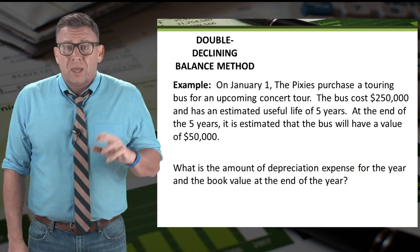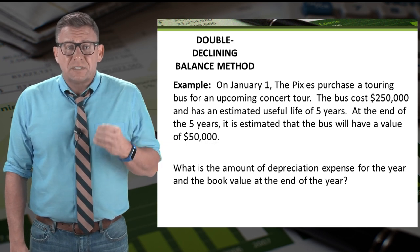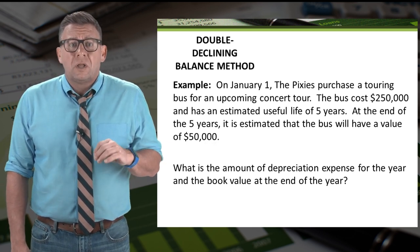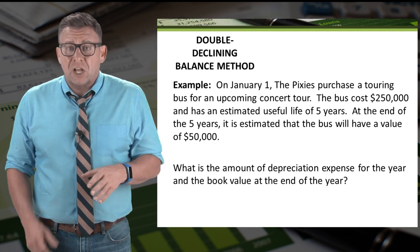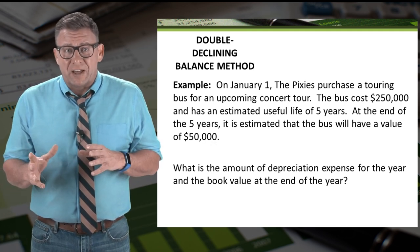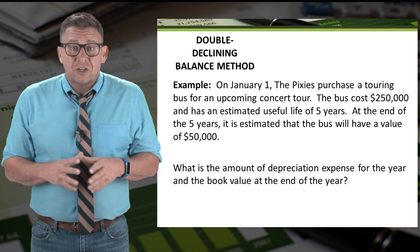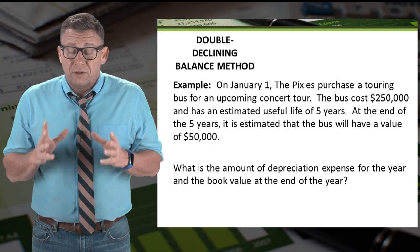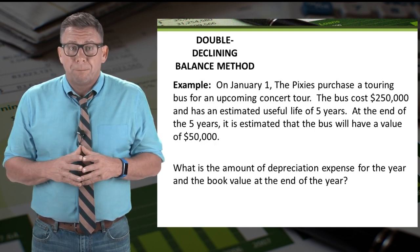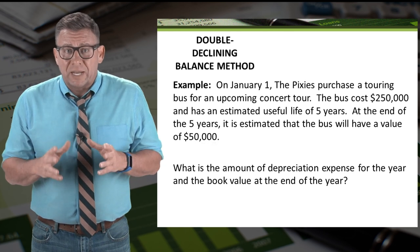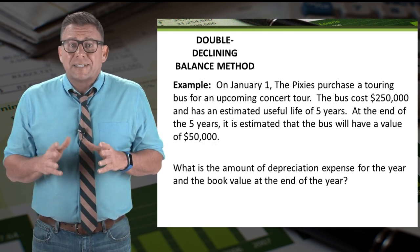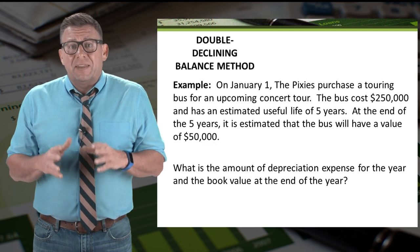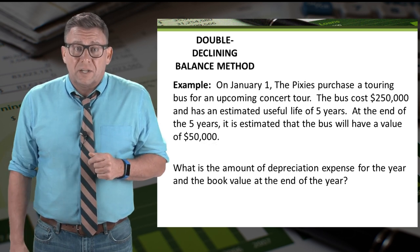Let's look at an example. On January 1, the Pixies purchased a touring bus for an upcoming concert tour. The bus costs $250,000 and has an estimated useful life of five years. At the end of five years, it's estimated the bus will have a value of $50,000. Using the double declining balance method, let's calculate the amount of depreciation expense and the asset's book value at year end.